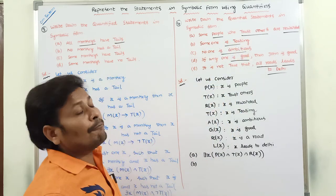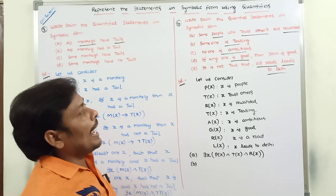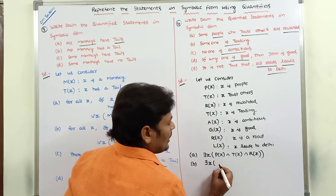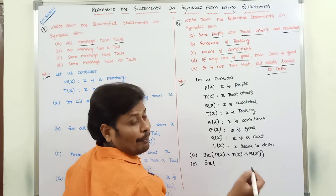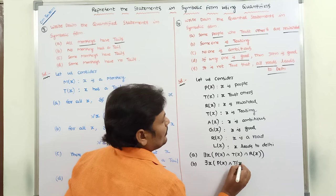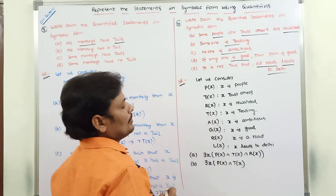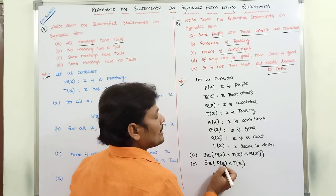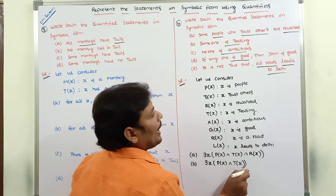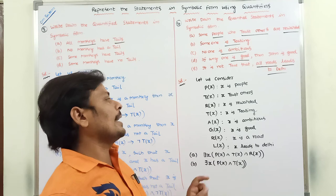Second statement: 'Someone is teasing.' This can be rewritten as: there is at least one X such that X is a people and X is teasing. In symbolic form: there exists X, P(X) and T(X). Second statement is complete.